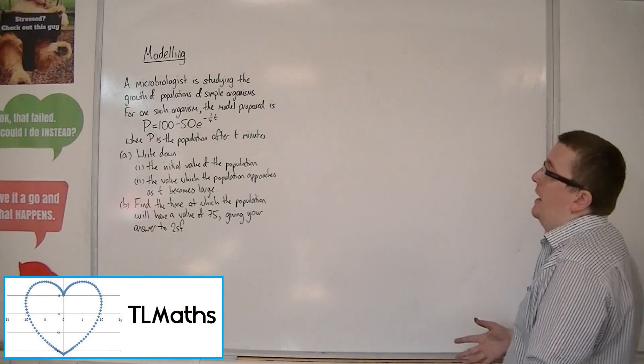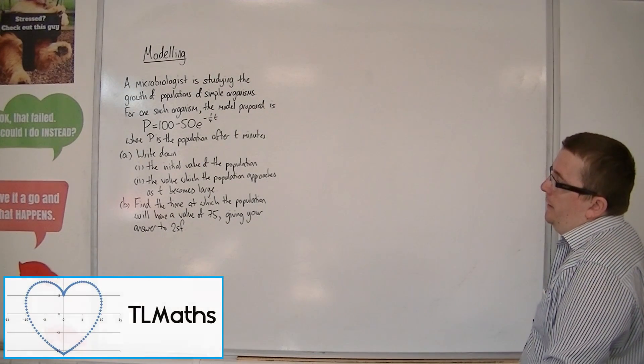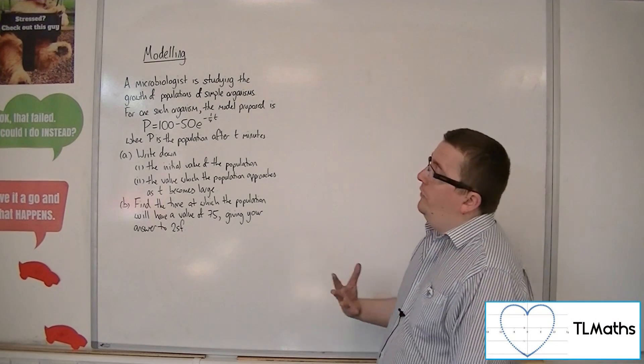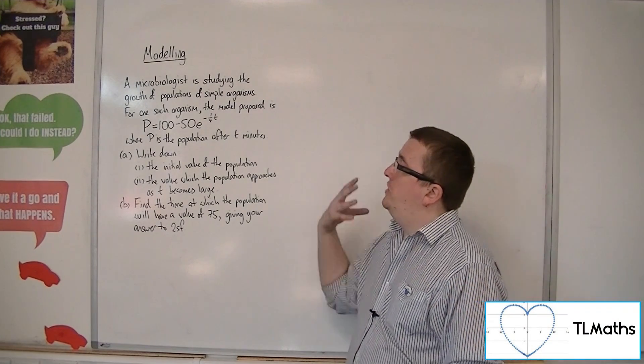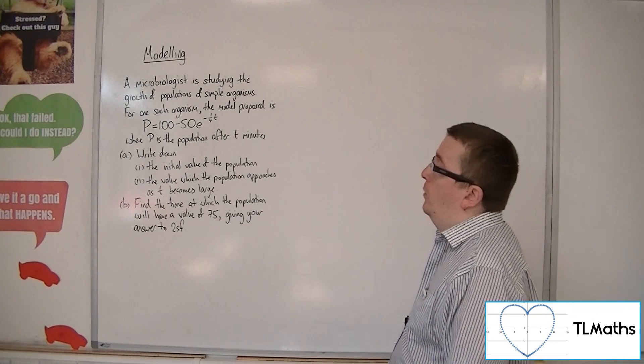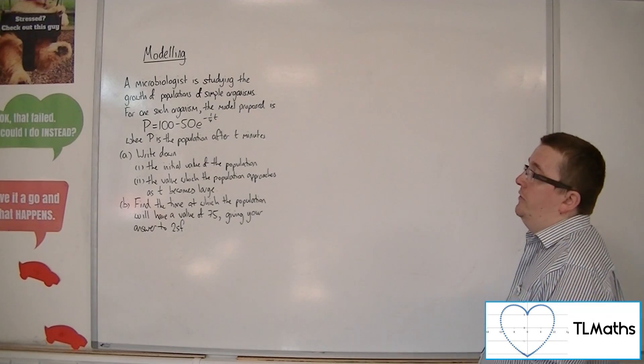Okay, so in this problem we have a microbiologist studying the growth of populations of simple organisms. For one such organism, the model proposed is p equals 100 minus 50 e to the minus a quarter t, where p is the population after t minutes.